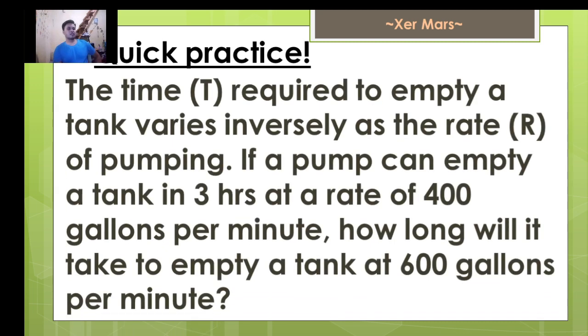Quick practice. The time T required to empty a tank varies inversely as the rate R of pumping. If a pump can empty a tank in three hours at a rate of 400 gallons per minute, how long will it take to empty a tank at 600 gallons per minute? We have the time and then the rate. We just simply multiply and divide. So our solution will be 3 times 400 over 600. And the answer is 2.